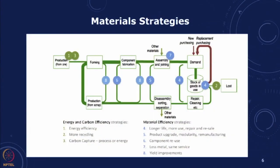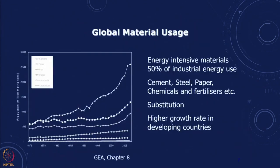In general, when we look at the production of a material, at each stage of production there would be some scrap which we can recycle. After the post-use demand phase, material can also be recycled. We can try to have the entire loop as a closed loop, using relatively less virgin material and recycling at each stage. Energy-intensive materials — cement, steel, paper, chemicals, fertilizers — account for about 50 percent of industrial energy use.